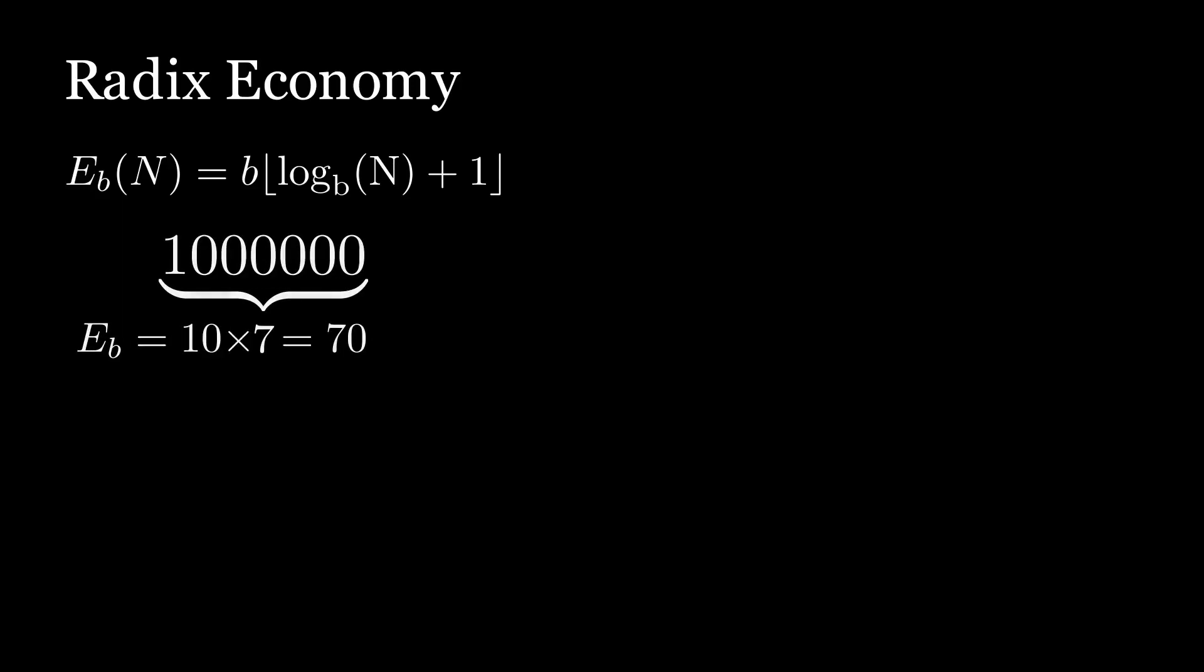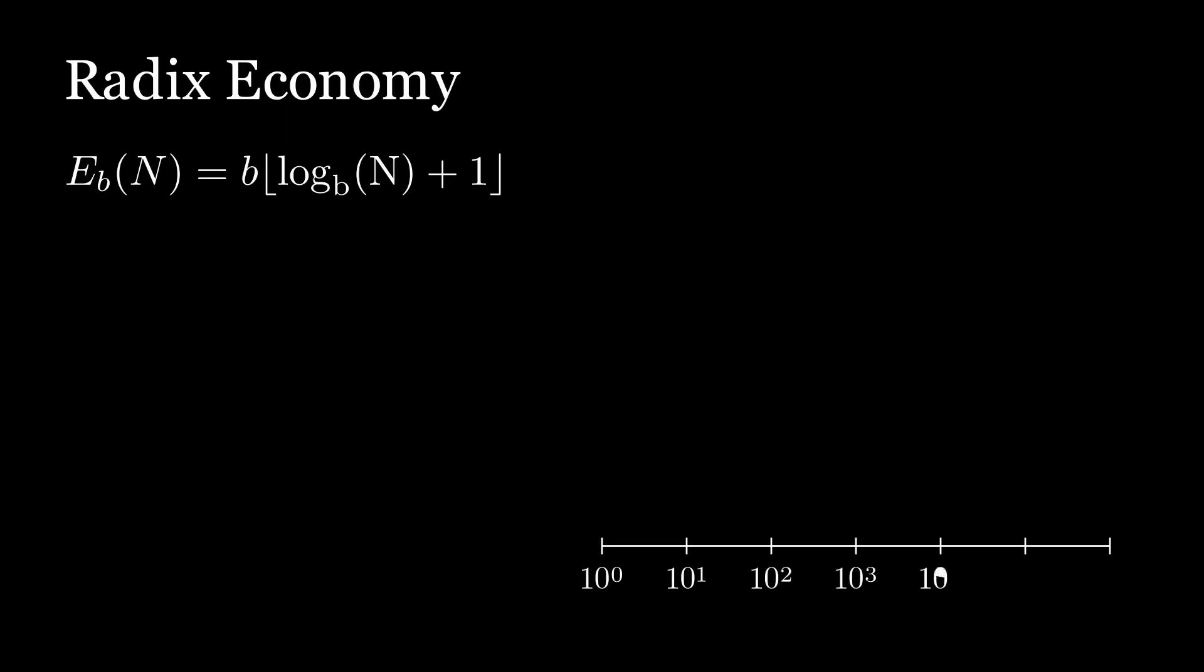Defined this way, radix economy isn't a single number. It varies with the numbers we plug into it. In fact, it's not even a smooth function. It jumps up every time we add another digit. Here's what it looks like on a log scale.